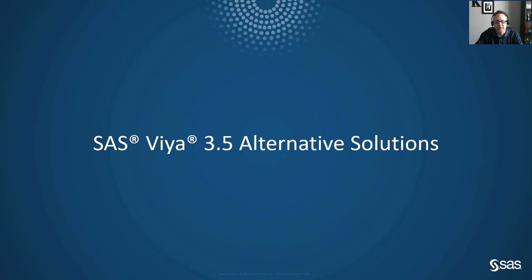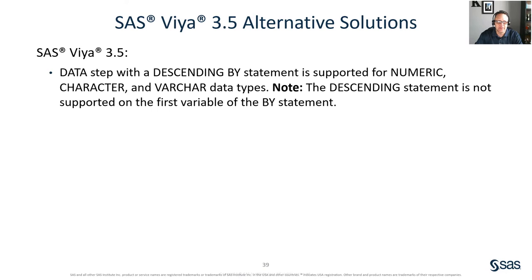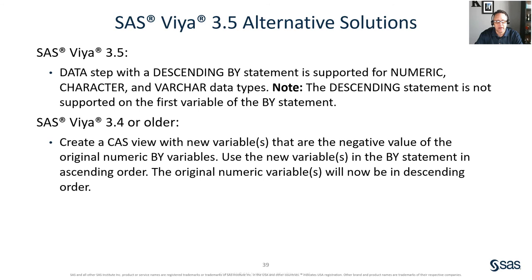In this section, I'll introduce you to some alternative solutions for functionalities and capabilities that are not yet supported in SAS Viya. In SAS Viya 3.5, the data step with the descending by statement is supported for numeric, character, and varchar data types. However, the descending statement is only supported on the first variable of the by statement. In SAS Viya 3.4 or older versions, a workaround is to create a CAS view with new variables that are the negative value of the original numeric by variables. Use the new variables in the by statement in ascending order — the original numeric variables will now be in descending order.